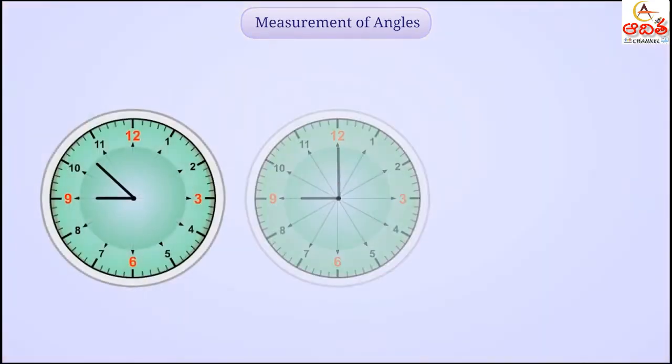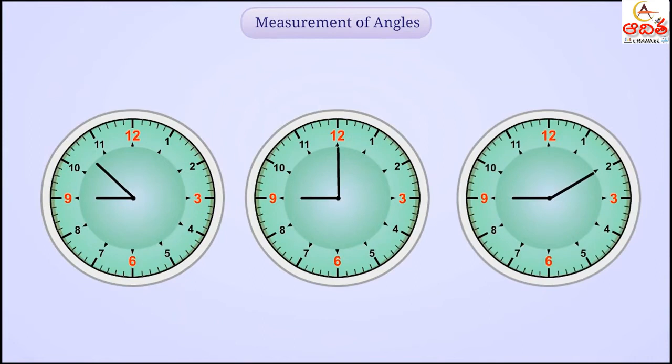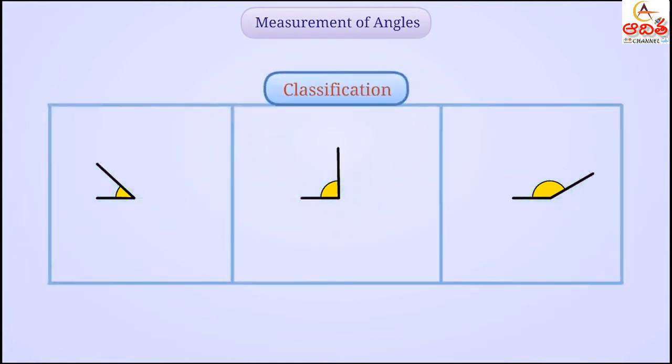In a clock, if we place one needle in a fixed position and rotate the other needle, we will get different angles. To understand the concept of angles, we classify them into various types. To classify angles, it is necessary to know how to measure the angles. So let's learn measurement of angles.